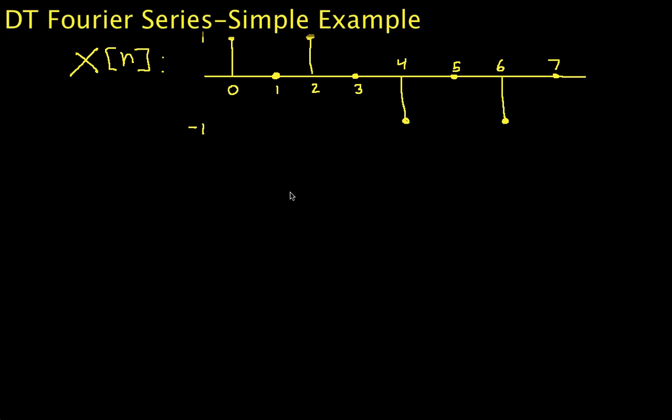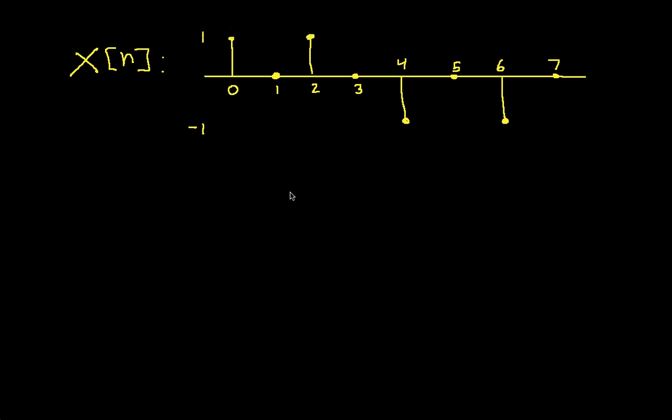Hello and welcome to this video in which we show how to compute the discrete-time Fourier series coefficients for a simple periodic discrete-time waveform. This is a fairly simple example in the sense that we won't be going through a lot of complex stuff to get the answer — we'll be going through some complex stuff, but hopefully it will help you make sense of how to actually compute the discrete-time Fourier series.